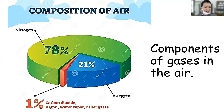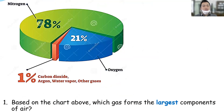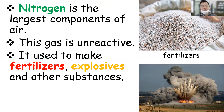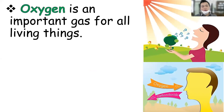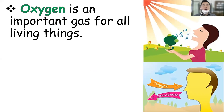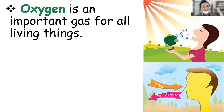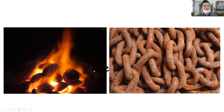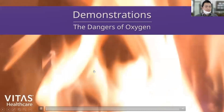As you can see, nitrogen is 78 percent while oxygen is only 21 percent. Nitrogen is the largest component of the air — it is unreactive and it's used to make fertilizers and explosives. I told you already that one. Remember, kids, I told you last meeting that oxygen is the most important gas for all living organisms. Living things need oxygen in order to survive. Without oxygen we cannot survive — all of us will die.